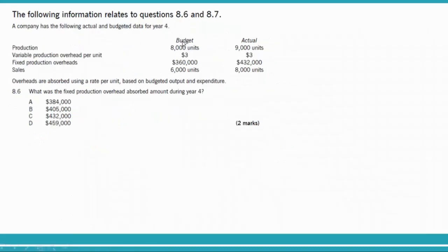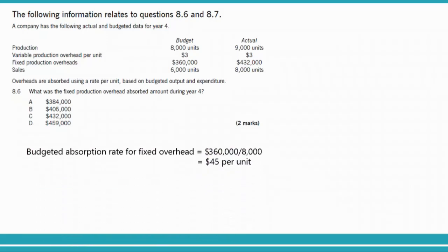The data for questions 8.6 and 8.7 — starting with the requirement: what was the fixed production overhead absorbed amount during year four? Remember, overhead absorbed equals OAR multiplied by actual activity. The budgeted fixed overhead is $360,000 divided by budgeted activity of 8,000 units, giving an OAR of $45 per unit.